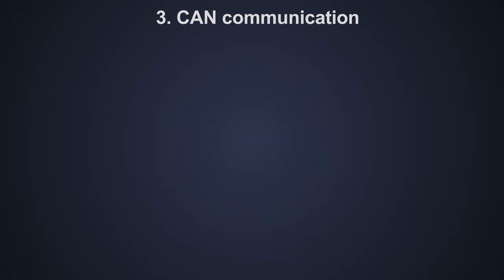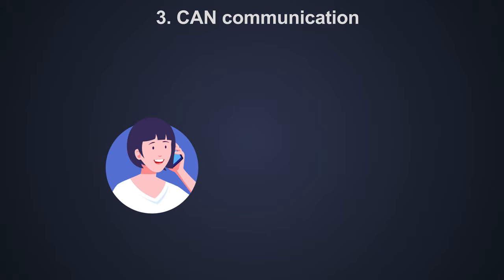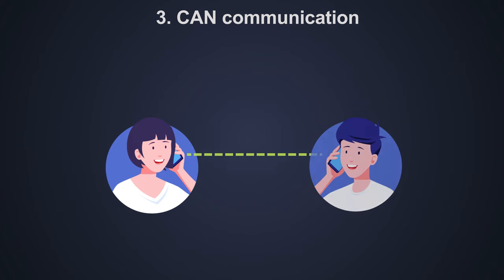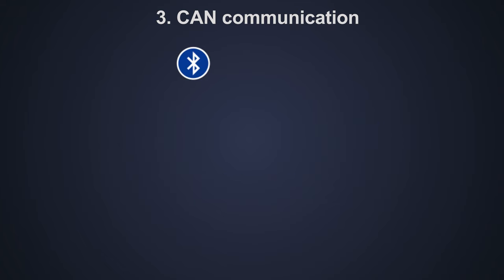Let's understand about the communication using real world example. When we wish to talk to a person, we first try to call on his mobile number. Other person has to answer the call and establish the connection. Once a connection is established, both people can transmit, receive and process the data. But for this successful communication, connections must be intact and be monitored. If a call is disconnected, the communication is disturbed.